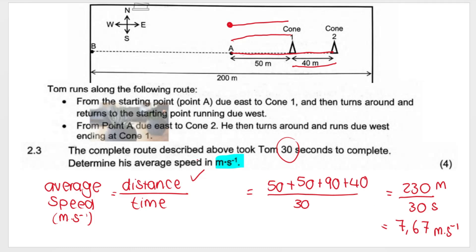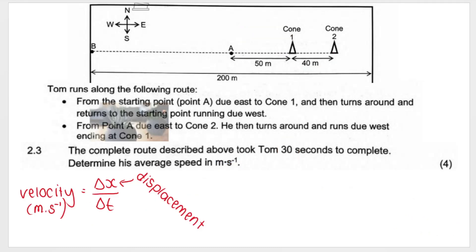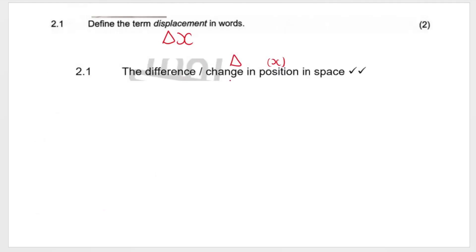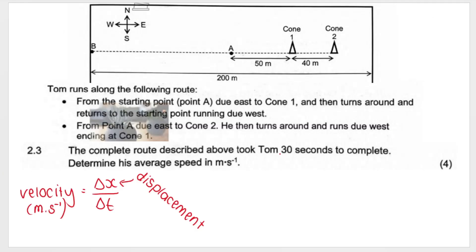Now I just want to quickly contrast it, even though the question didn't ask, with how we would calculate displacement of Tom. And from this, we would get the velocity. Remember, displacement, as we defined earlier, is the difference or change in position. After 30 seconds, it took Tom 30 seconds to complete this whole route. He started here and ended at cone 1. How we calculate displacement is always from where you start pointing towards where you end. So he started at A and ended at cone 1. So his displacement was 50 meters to the east.